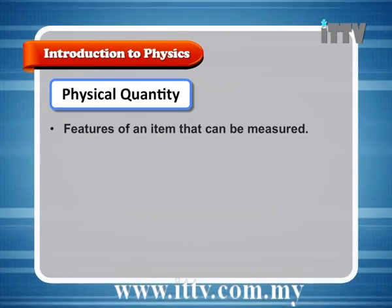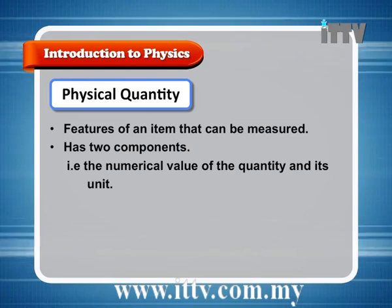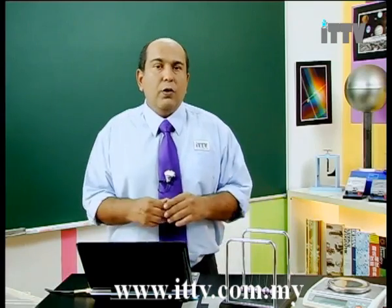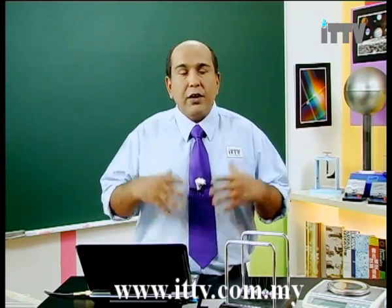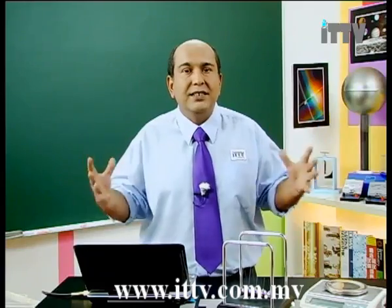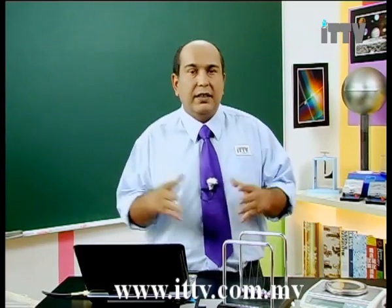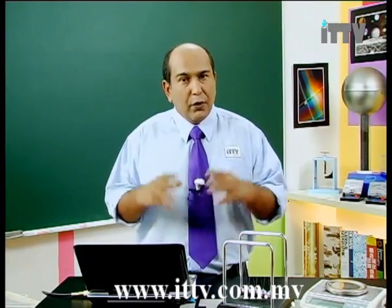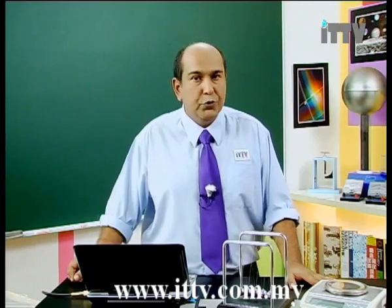Physical quantity: a feature of an item that can be measured. It has two components — the numerical value of the quantity and its unit. Physical quantities are things that we can see and measure. For example, you cannot measure a mother's love for a child — that is too abstract, there is no unit for it. But the height of a mountain, the length of an aeroplane, or the thrust of an engine — all of these have a way of measuring and a correct unit to apply.